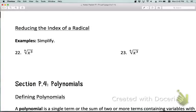Sometimes it's possible to reduce the index of a radical. For example, if you look at number 22, that's a ninth root. It would be really nice if we could get that to something smaller because it makes it easier to find the answer.